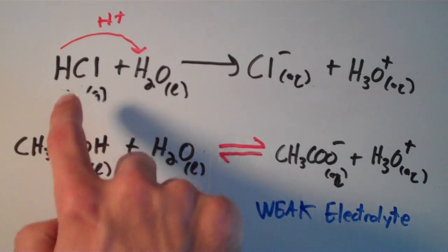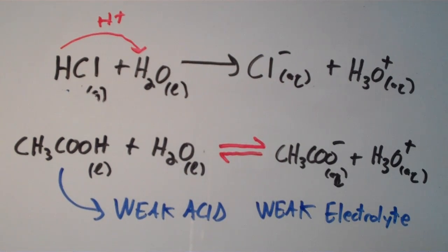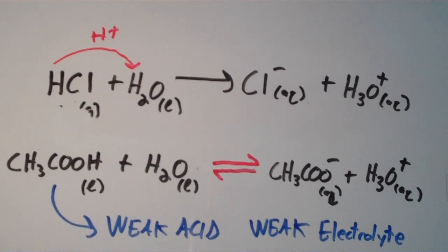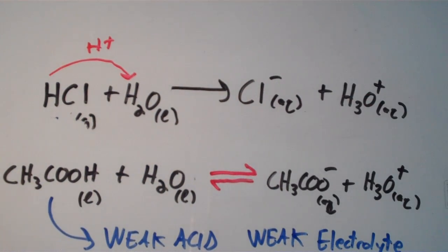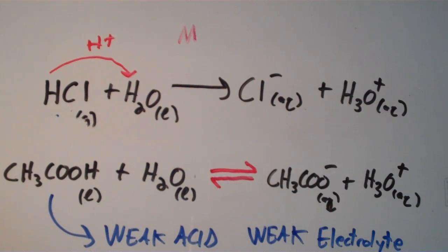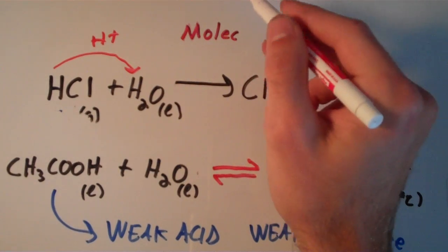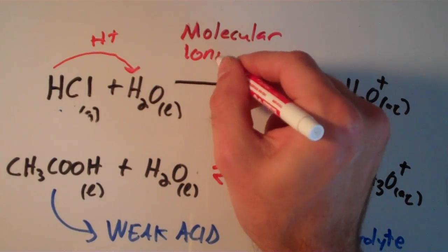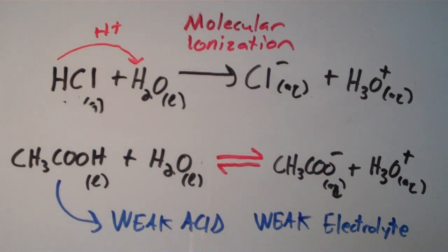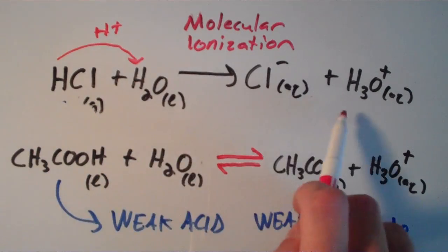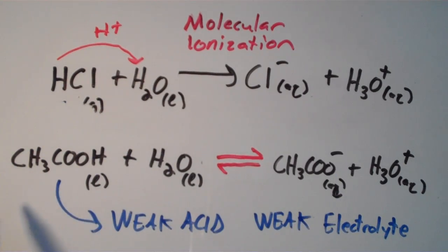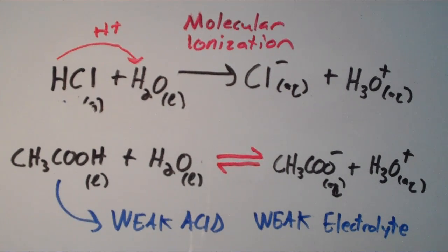Notice that HCl and CH3COOH are both molecular compounds — there are no metals in there. So you have a molecular compound that actually forms ions when you put it into water, and this is what we call molecular ionization. Molecular ionization is when you have a molecular compound that forms ions when put in water. That can result in either a strong electrolyte, in the case of a strong acid or base, or a weak electrolyte, in the case of a weak acid or base. That is a general discussion on aqueous solutions and electrolytes.